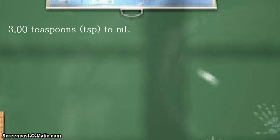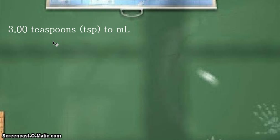Hello, welcome to another edition of converting your units using dimensional analysis. In this example, we will be converting 3.00 teaspoons, abbreviated as TSP, into the unit mL. The unit teaspoons is usually used when you are baking or cooking, so it's very useful to know how to convert that into the more familiar unit, which is the mL.